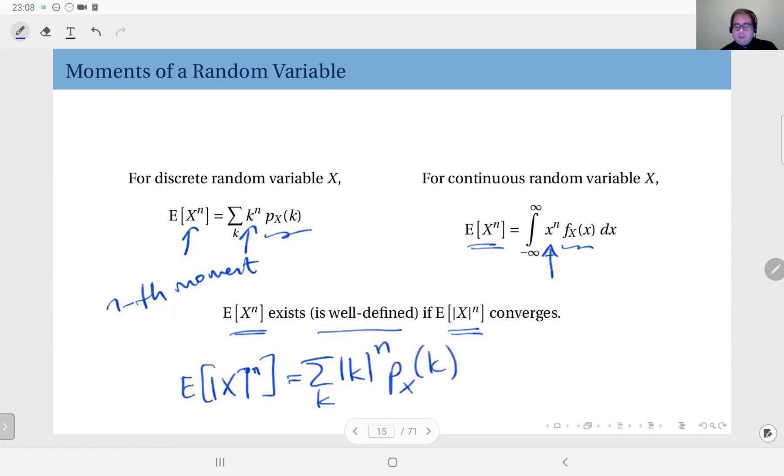And in the continuous case, this would be the integral over the entire real line, absolute value of x pdf. And if you have this sum or this integral converging, then we can say the nth moment exists.